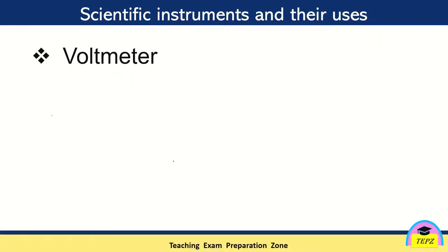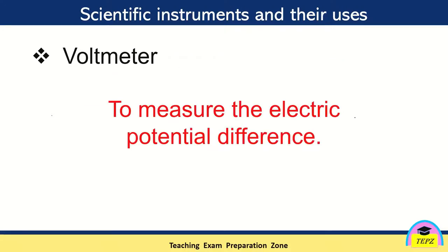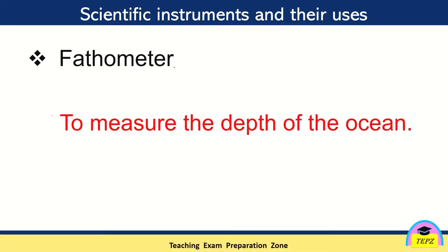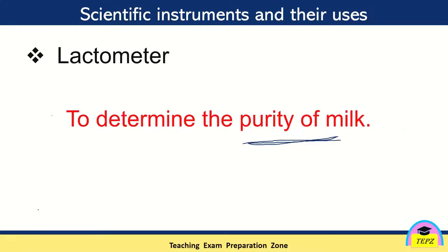Next one is voltmeter. Voltmeter is used to measure the electrical potential difference. Fathometer is used to measure the depth of the ocean. Lactometer is used to determine the purity of milk.